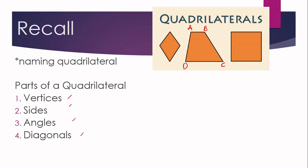If we consider our given quadrilateral, the vertices are point A, vertex B, point C, and point D. The sides of the given quadrilateral are line segment AB, line segment BC, line segment CD, and lastly line segment DA. So these are the four sides.